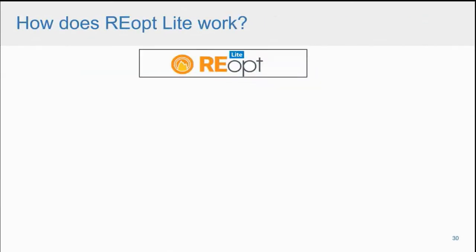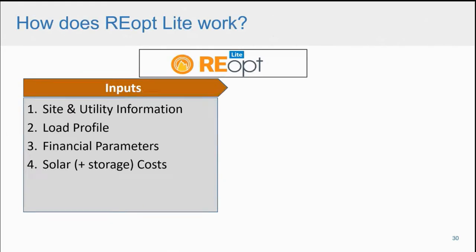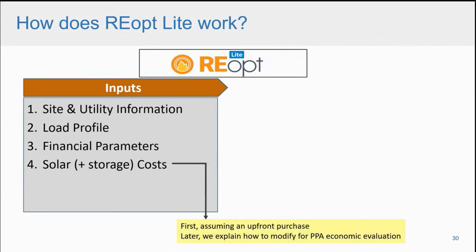Now jumping into how REopt Lite works step by step. It requires a few inputs: site and utility information, a load profile, financial parameters, solar costs, and if looking at solar plus storage, storage costs. It mostly focuses on upfront purchases. System design is optional — there are accurate defaults that will do the job. The three main outputs are: a recommended kilowatt system size based on economics, an hourly load vs. PV generation profile over the course of a year, and economic results.